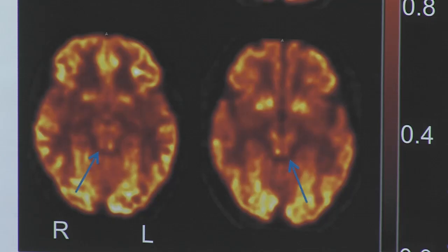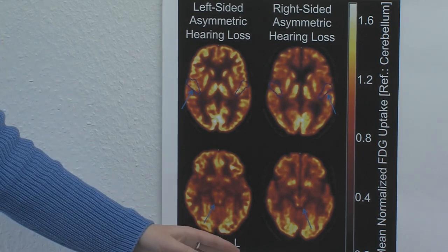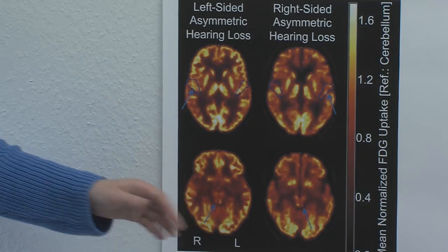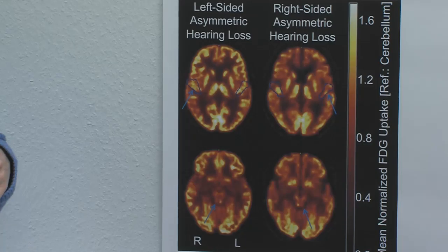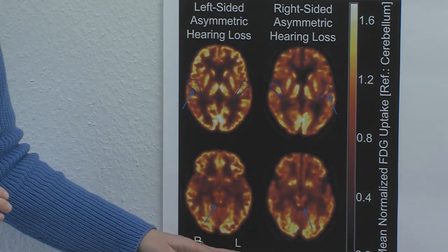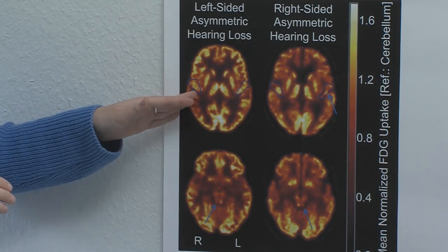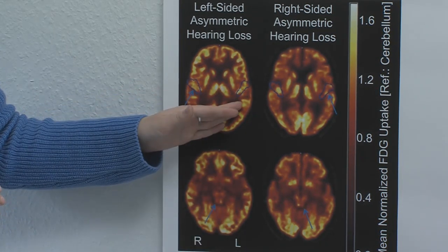Therefore we have to look on the contralateral side, to the left side, to see the impact on regional FDG uptake by the deaf ear. At the level of the brainstem, we see an asymmetry between the ipsi and contralateral side to the deaf ear. There is less regional FDG uptake contralateral to the hearing-impaired ear on the left-hand side. The same asymmetry can be seen at the level of the cortex — contralateral to the left deaf ear, we see less FDG uptake in the primary auditory cortex compared to the ipsilateral side.